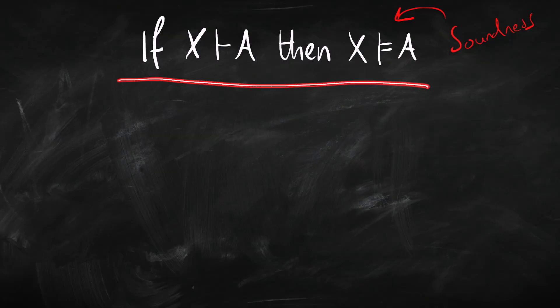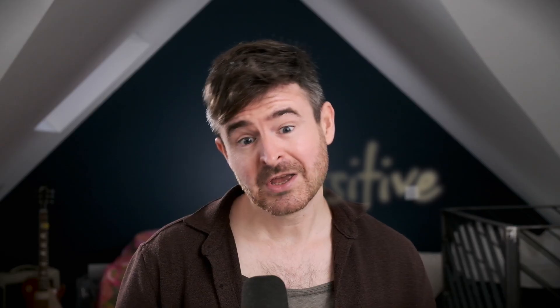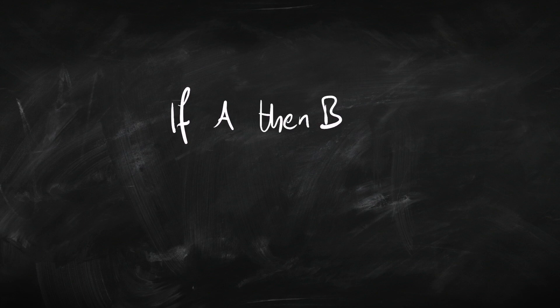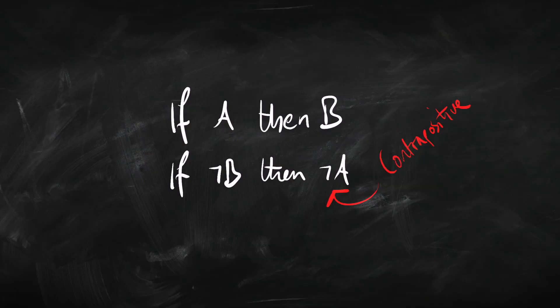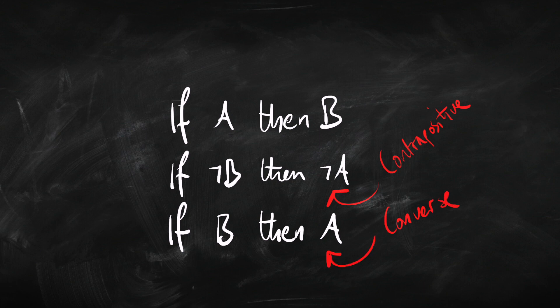We've got this if-then statement of soundness. It's usually a really good idea to think about proving the contrapositive. If we have any if-then statement — if A, then B — its contrapositive goes: if not-B, then not-A. We've got to be careful to distinguish the contrapositive from the converse. The converse of 'if A then B' just goes 'if B then A'. The contrapositive adds negations, whereas the converse just switches the order of antecedent and consequent.